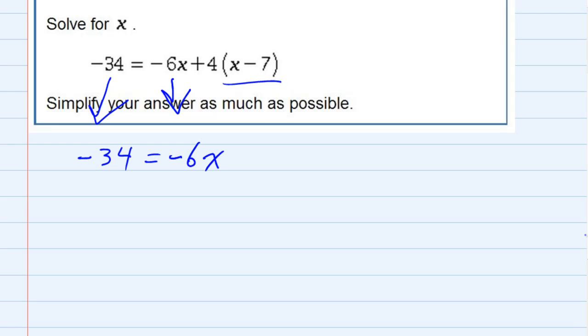So distributing the 4 gives me 4 times x, 4x, that's this part, and then distributing the 4 to the negative 7, 4 times minus 7 is minus 28.